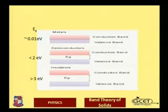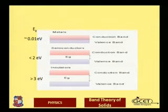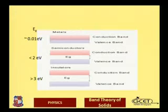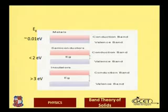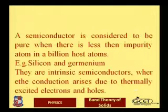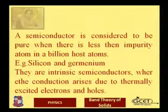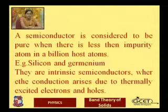In insulators, the energy band gap is greater than 3 eV and can reach up to 10 electron volts. Therefore, insulators require a very large amount of energy for electrons to move from the valence band to the conduction band.